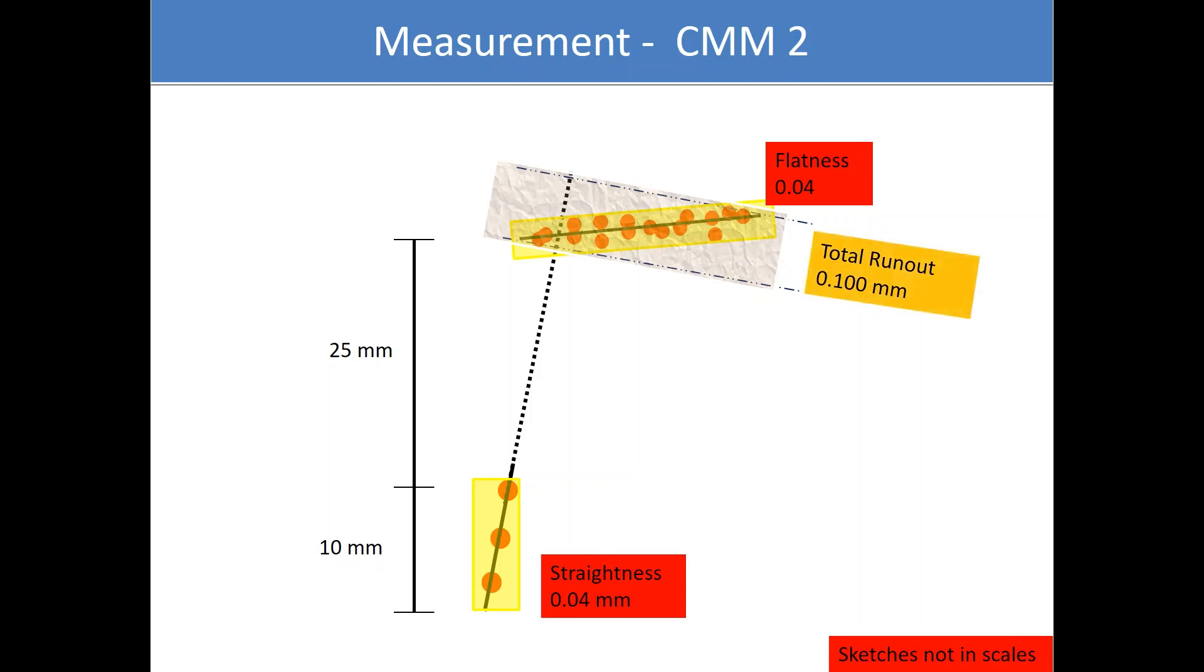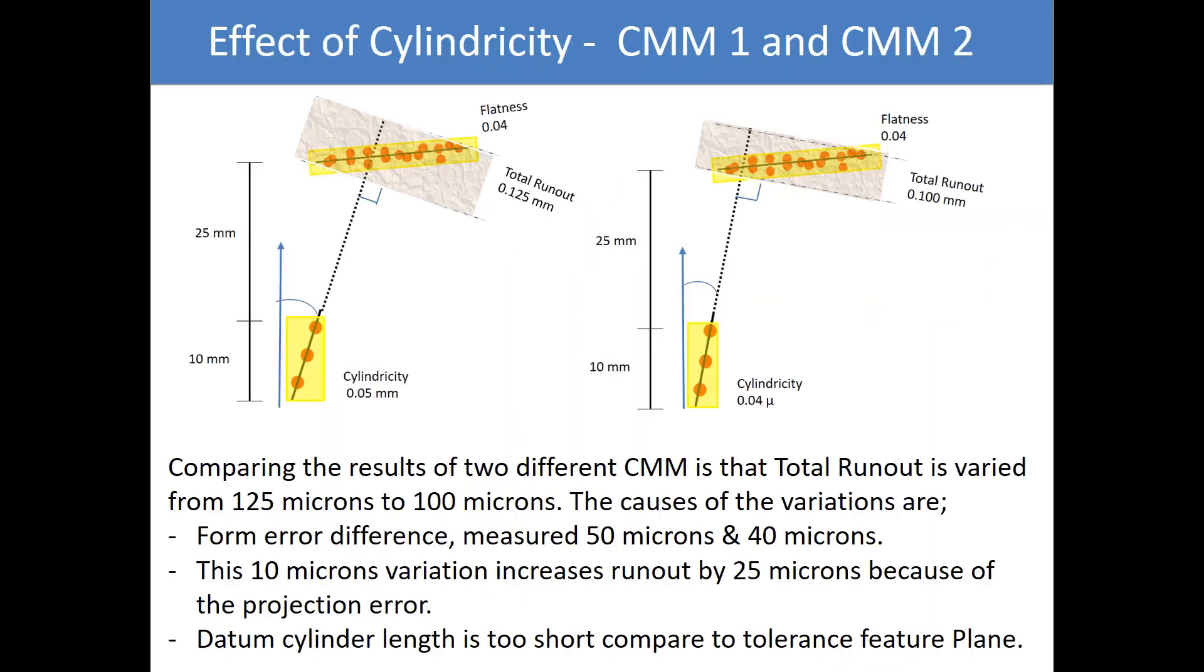This run out measured is 0.100 mm. In previous case of straightness of 0.05 mm it was 0.125 mm. Comparing the results of two different CMMs is that total run out is varied from 125 microns to 100 microns.